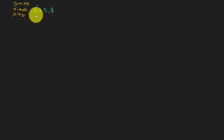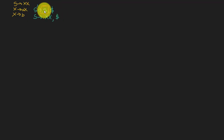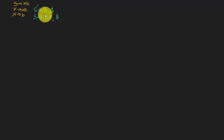With the dot before S, we call all rules that have S on the left-hand side. So S goes to dot XX with dollar as the look-ahead. Everything after the dot — we take the FIRST of that symbol and that becomes the look-ahead for the closure. We apply closure to S and bring this rule down.